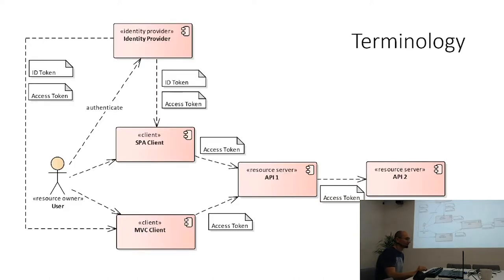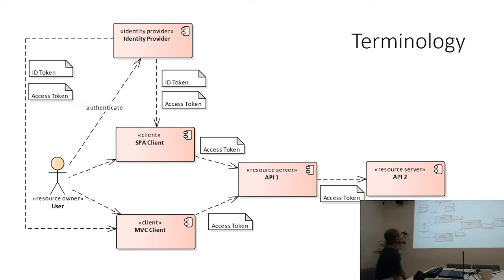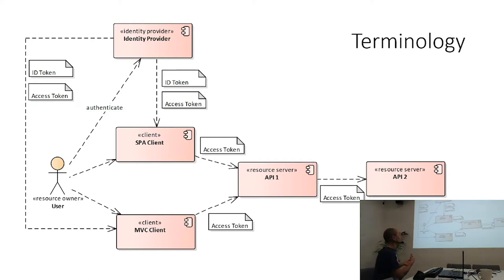Quick terminology we'll use throughout the presentation: the identity provider is the external component that implements authentication and issues tokens, implementing both OpenID Connect and OAuth 2. The ID token and access token are terminology from OpenID Connect. Applications facing users are called clients. APIs that need to be protected are called resource servers — the API contains resources it serves to incoming requests, but it must be sure the requesting application is authorized.